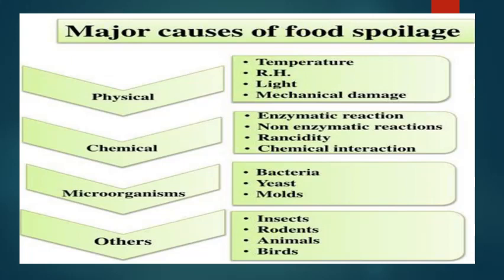Let us understand the major causes of food spoilage in general. The main causes include physical factors such as temperature, relative humidity, light, and mechanical damage. There is also chemical spoilage, sometimes due to normal enzymes present in the food, non-enzymatic reactions leading to oxidation and rancidity, and chemical interactions. The most important cause in modern food processing is microorganisms, which may be naturally present, survive heat processing, or enter through contamination.